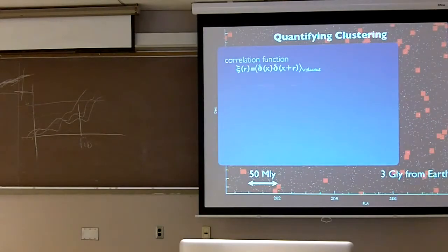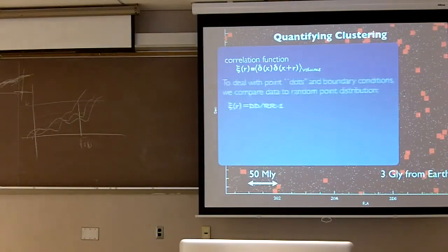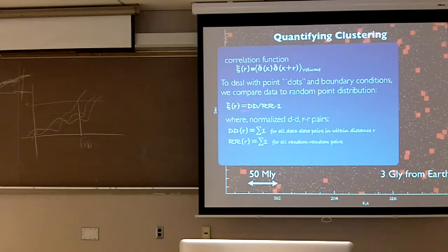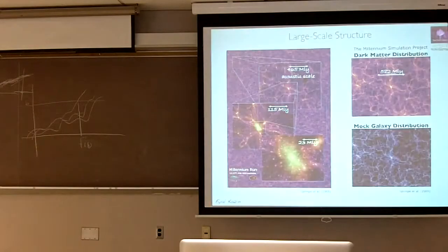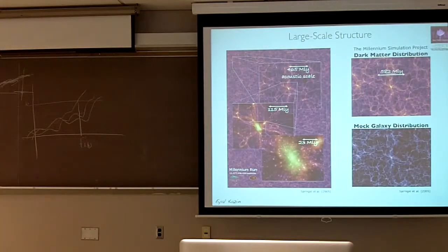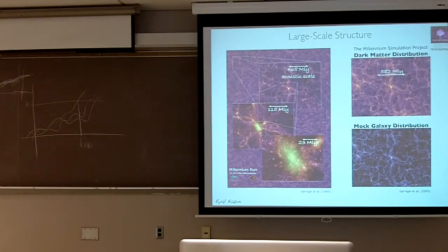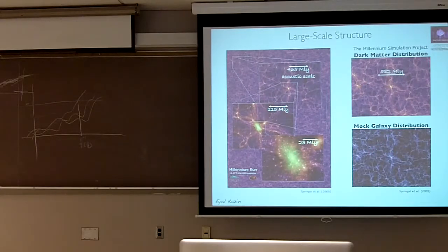Going back to my definition of the autocorrelation function, our estimator in practice is comparing your data-data pairs to your random-random pairs. It has been shown that if you want to minimize your variance, a better estimator is comparing also your data-random pairs. Unfortunately we can't see dark matter directly — it doesn't interact with radiation, so it's not luminous. We have to use what we call tracers, something that traces dark matter like the tip of an iceberg to everything under the water. I focus here on galaxies, but there are other sorts of tracers that people are using. We have good reason to believe that these luminous tracers aggregate at the deepest potential wells of dark matter, and so we expect similar correlation functions.